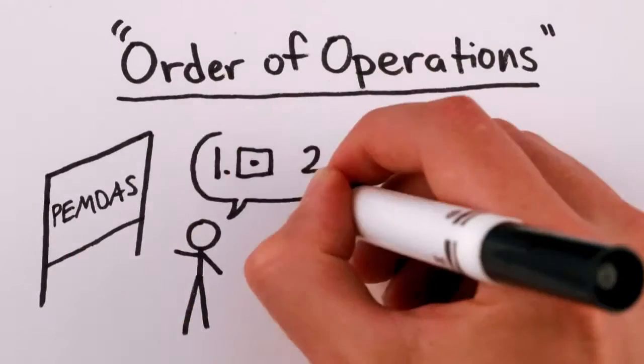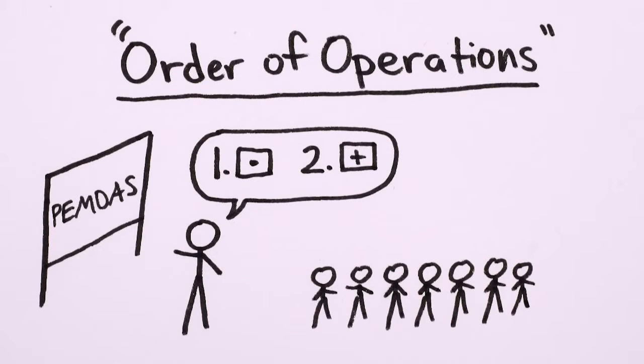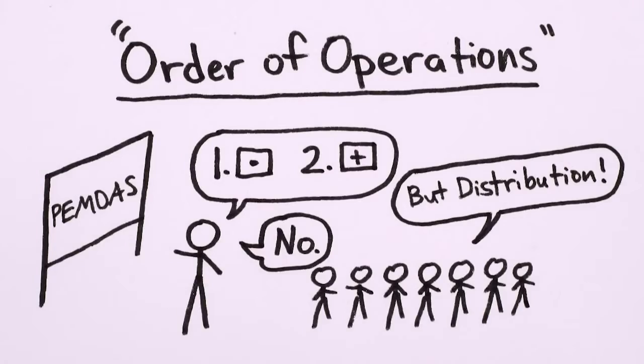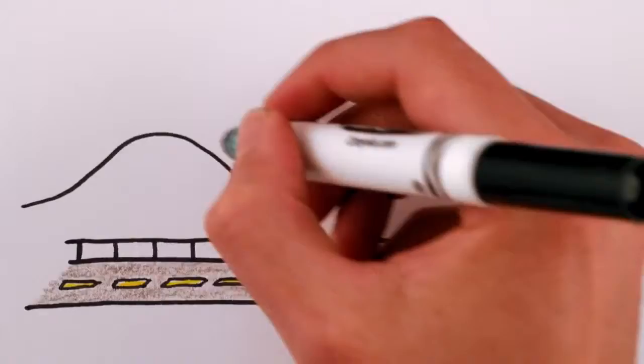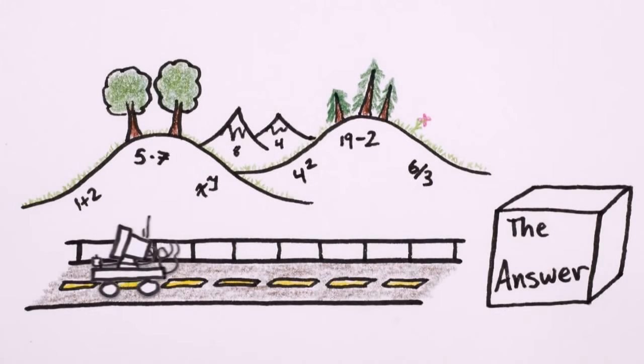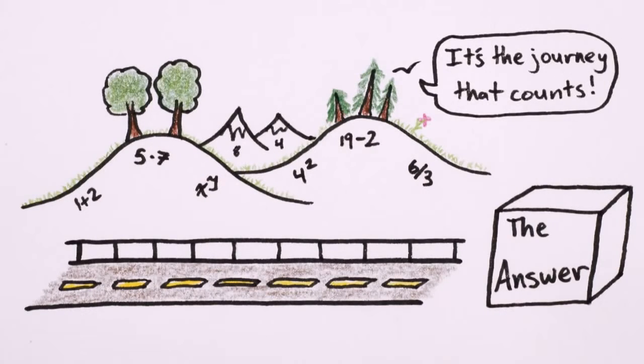The order of operations learned in school, however, is different. It's a mechanical set of instructions that dictates just one of the many ways you can do algebra. It locks you into a single path through the beautiful mathematical landscape, which, while necessary for a computer whose goal is merely to give you the right answer, doesn't really give any insight onto what it is that you're doing when you do algebra.